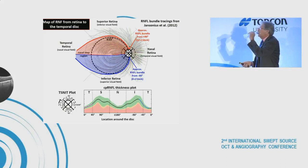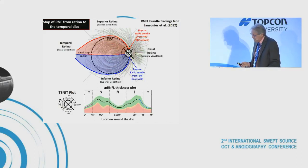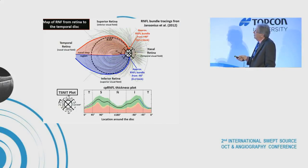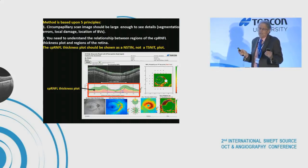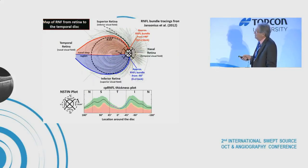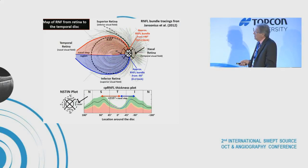Traditionally, this has been plotted as a TSNIT plot — from temporal to superior and so on — which splits the inferior and superior retina awkwardly. Instead, what we advocate as principle two is to plot it as an 'instant' plot, meaning the scan starts at the top and goes counterclockwise, so the central part of the visual field and retina appears in the center of the thickness plot.